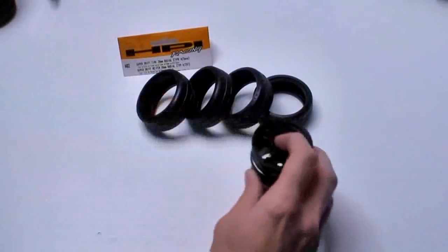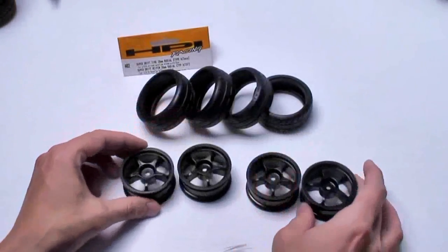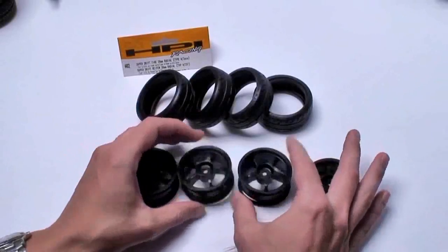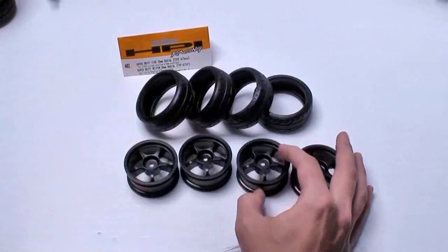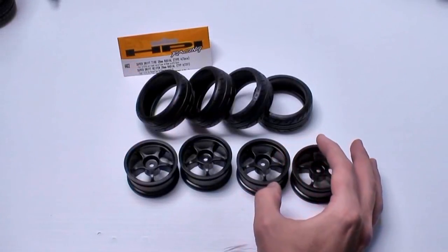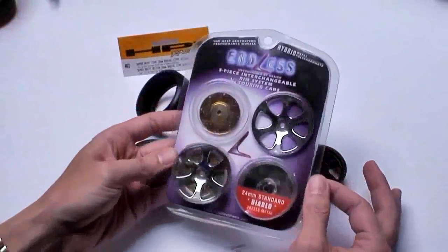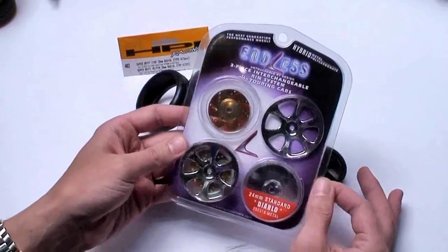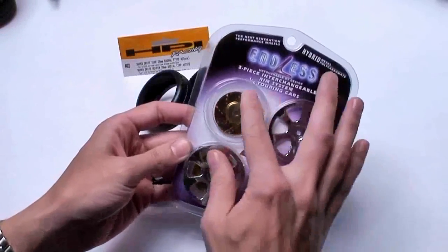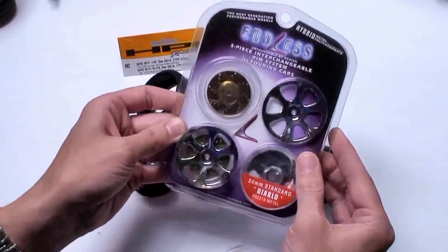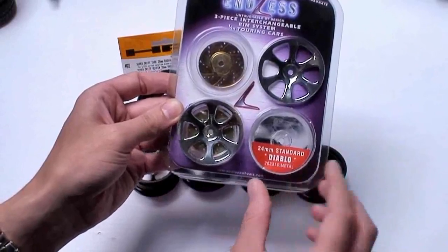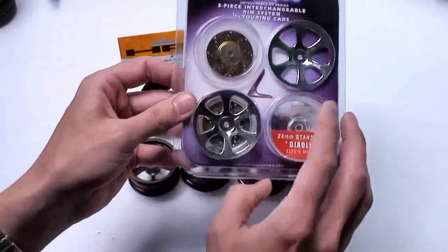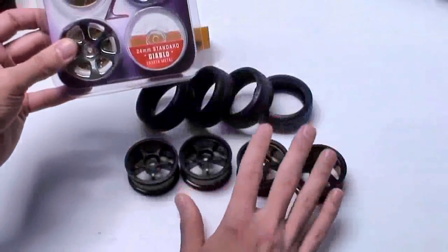So the plastic stock Tamiya rims that come with the car, just plastic. They're nice, they're not too bad. For a starter car or starter kit they're going to be efficient. But for this type of car I want to go a step beyond, and I also showed these spinners at the beginning of the video series. These are from Endless. It says here a three-piece interchangeable rim system for one-tenth touring cars. These are 24 millimeter standard Diablos. So let's have a look at these. I'm going to crack these open and install them on here after I glue the tire on.